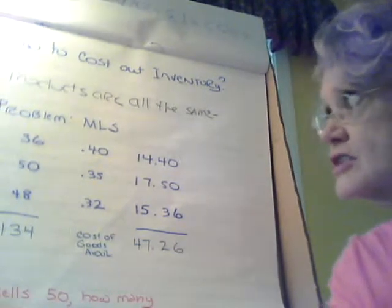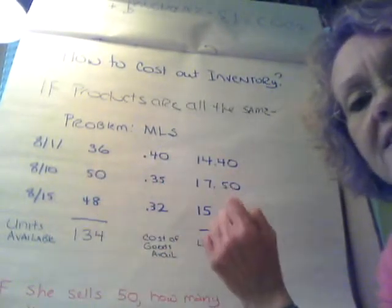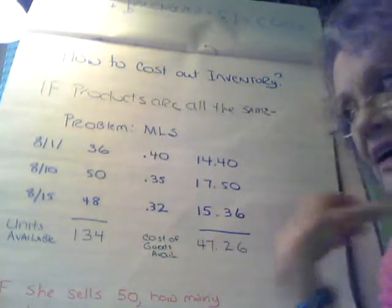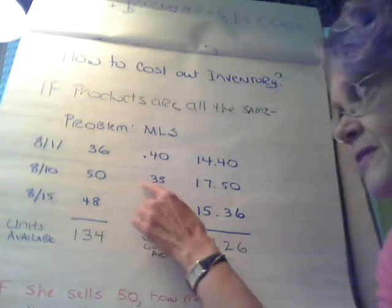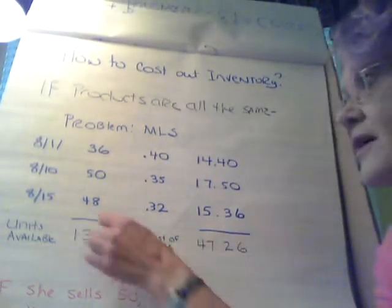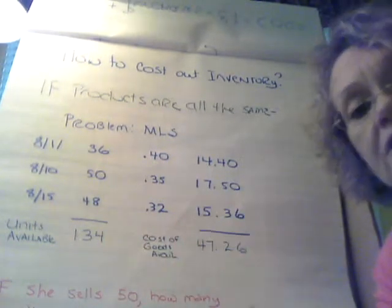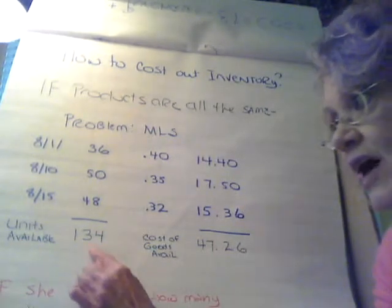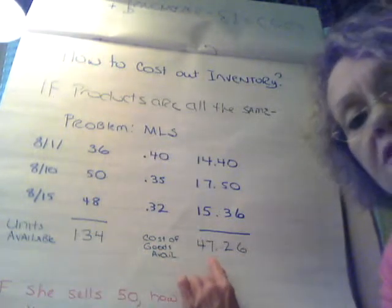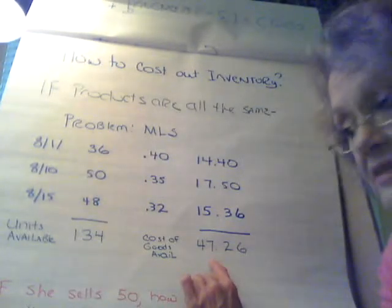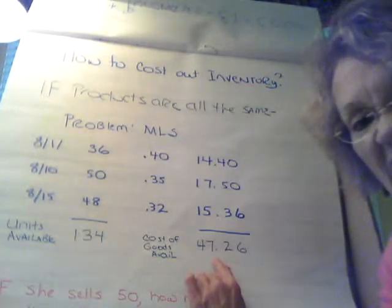So she starts her stand and on August 1st she buys 36 cans for 40 cents apiece and pays $14.40. Then she goes back on the 10th and the price has changed — she got them on sale — buying 50 of them for 35 cents and paying $17.50. Then on the 15th she bought 48 cans at $0.32 each for a total of $15.36. All in all she has 134 units ready to sell, and the cost of goods available to sell is $47.26.